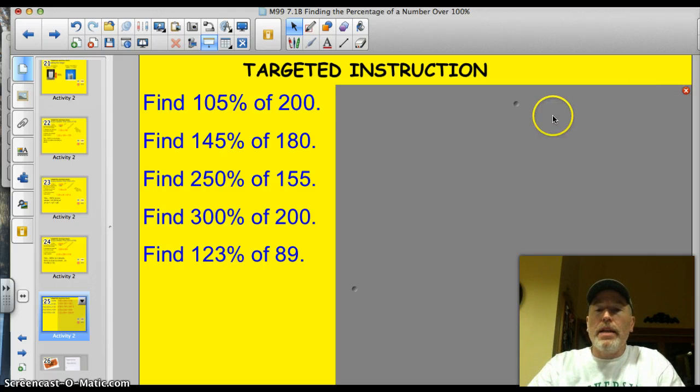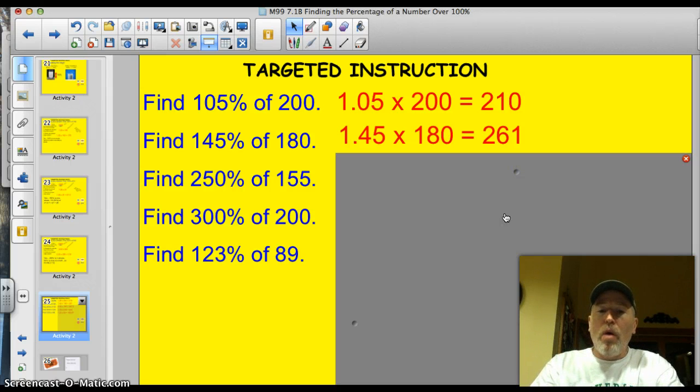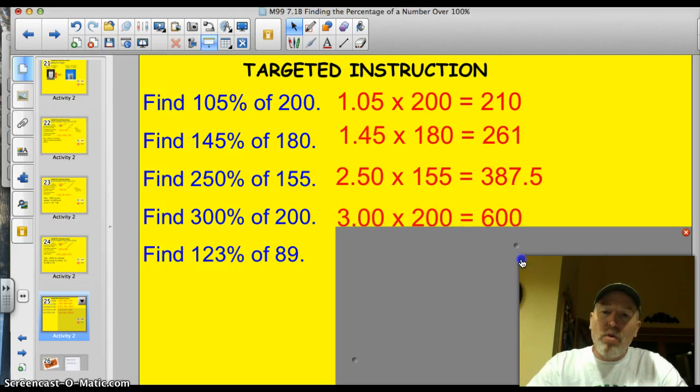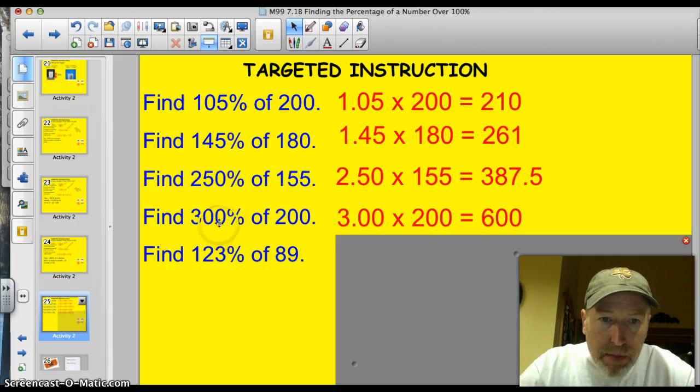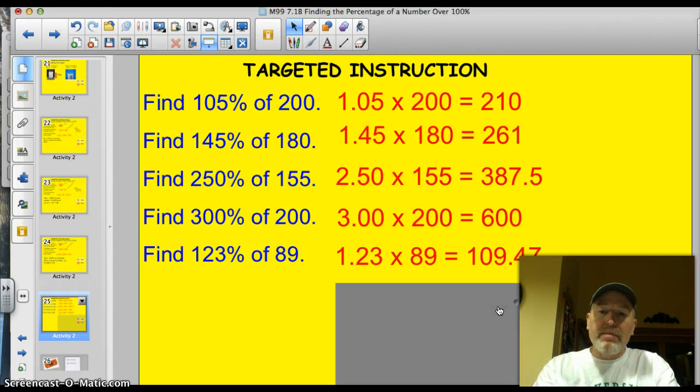Alright. I'm back. Let's see how you did. 105% moving that decimal, you get 210. 145% you'd have 1.45 times 180, you'd have 261. 250% of 155. Well, that'd be 2.50 times 155 is 387.5. 300% of 200. You can almost do this one in your head because it's just going to be 3 times 200, which is 600. And 123% of 89, you'd have 1.23 times 89 for a total of 109.47.